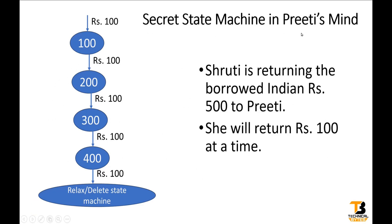Friends, this is the secret state machine in Preeti's mind. Intentionally or unintentionally, this state machine is created in Preeti's mind. So when the first 100 rupees is given to Preeti, she will come to this state — let us name it as 100. State 100 means Shruti has already paid 100 rupees. Now when Shruti gives another 100 rupees to Preeti, it will move to the 200 state — it will not go back to 100. The interesting thing is the input is the same: a 100 rupee coin or note. But for the same input, it is moving to a different state.